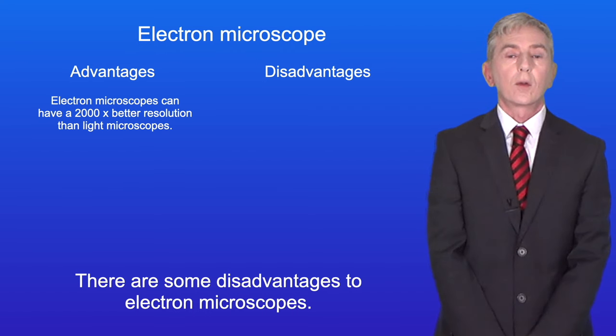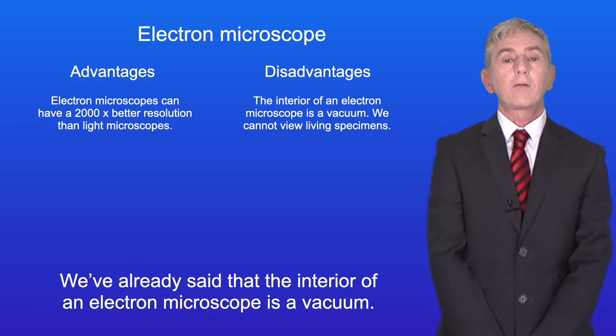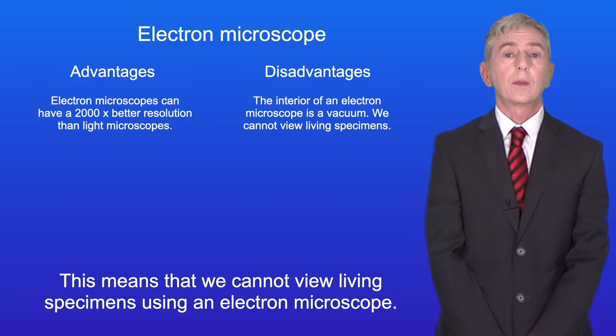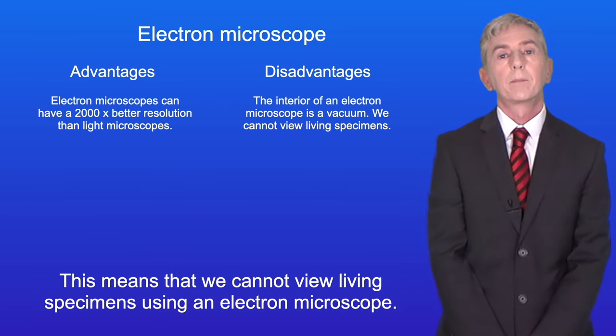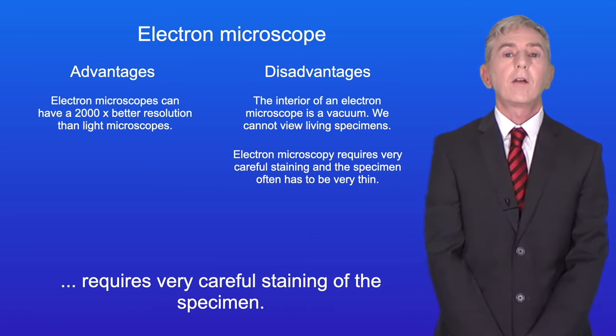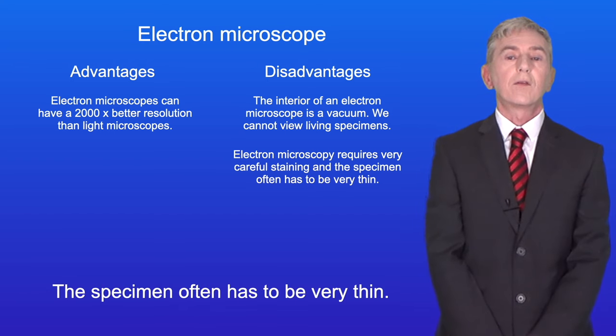There are some disadvantages to electron microscopes. The interior is a vacuum, which means we cannot view living specimens. The second disadvantage is that electron microscopy requires very careful staining of the specimen, and the specimen often has to be very thin.